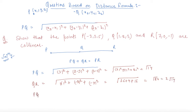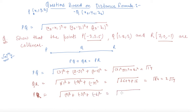Now we find PR. Here is point P and here is point R. So: 7 minus (minus 2) is 9, squared; plus 0 minus 3 is minus 3, squared; plus minus 1 minus 5 is minus 6, squared. That is 81 plus 9 plus 36, which equals 126 under the root, coming out to be 3 root 14.